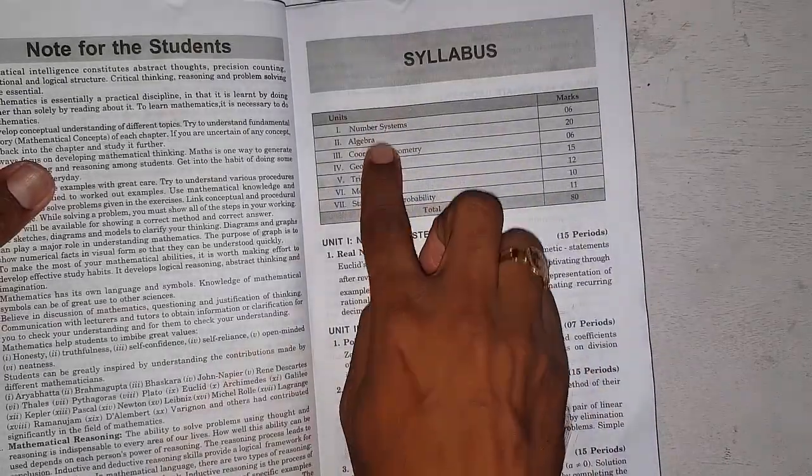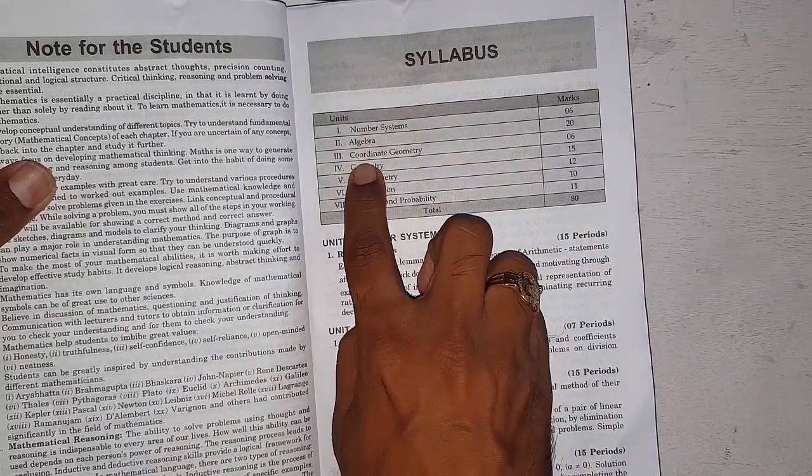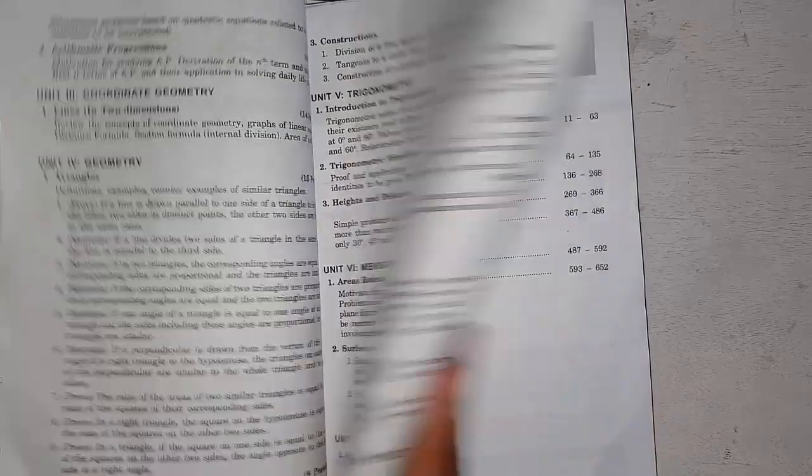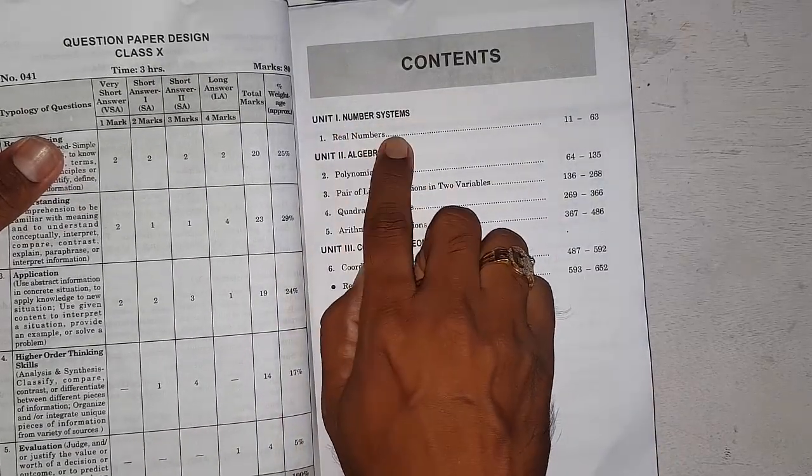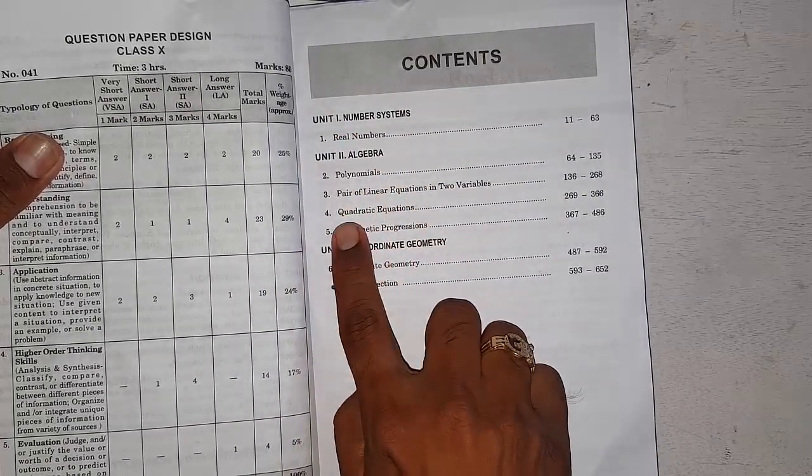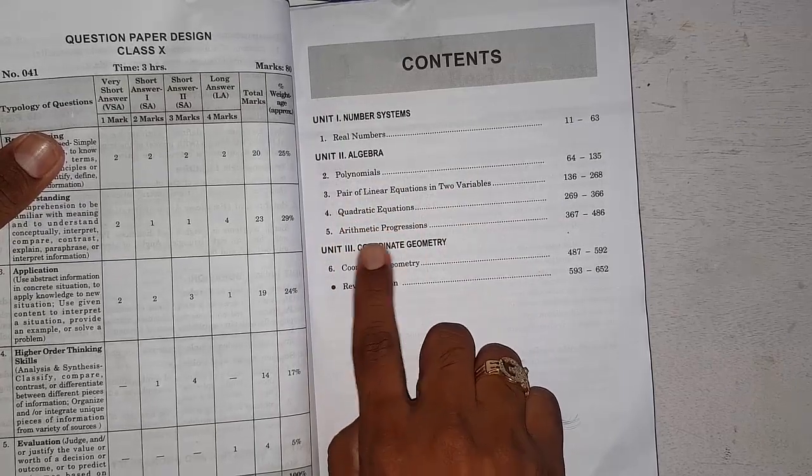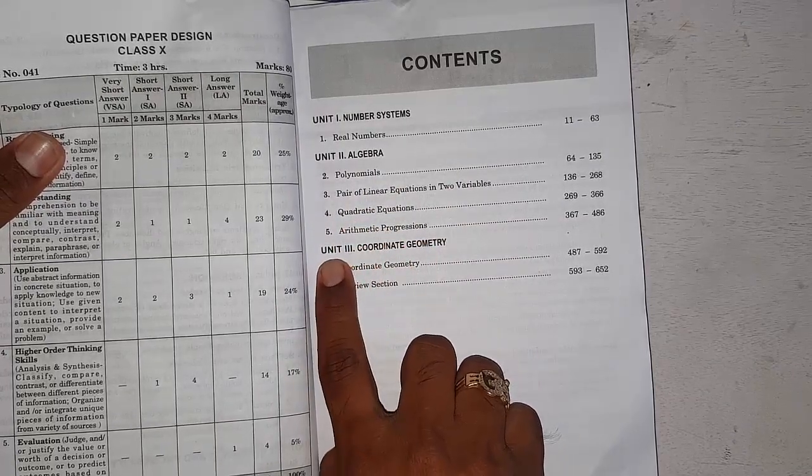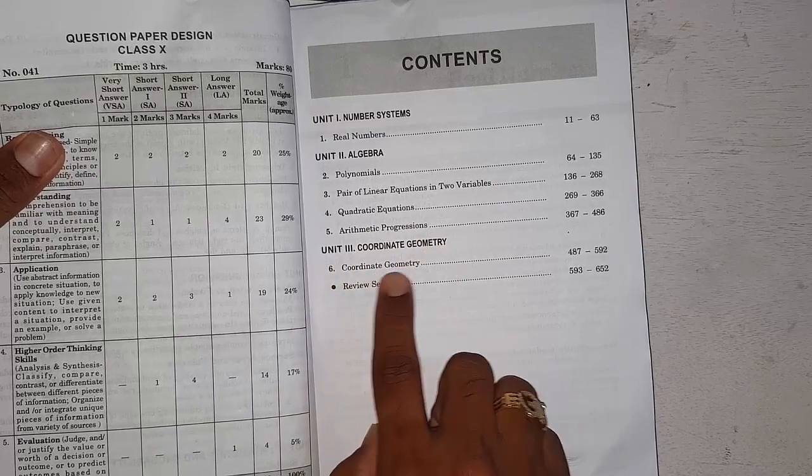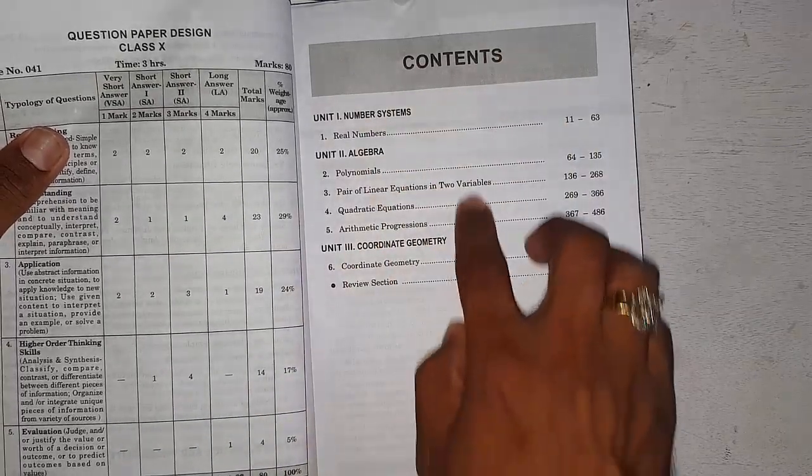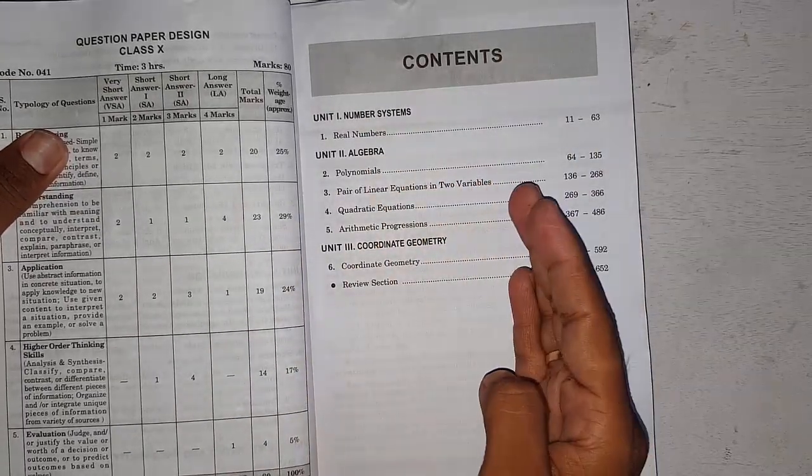In these three sections, there are several chapters. They selected Real Numbers from Number System, Polynomials, Pair of Linear Equations in Two Variables, Quadratic Equations, and Arithmetic Progression from Algebra, and Coordinate Geometry. These are in Part 1, with remaining chapters in Part 2.